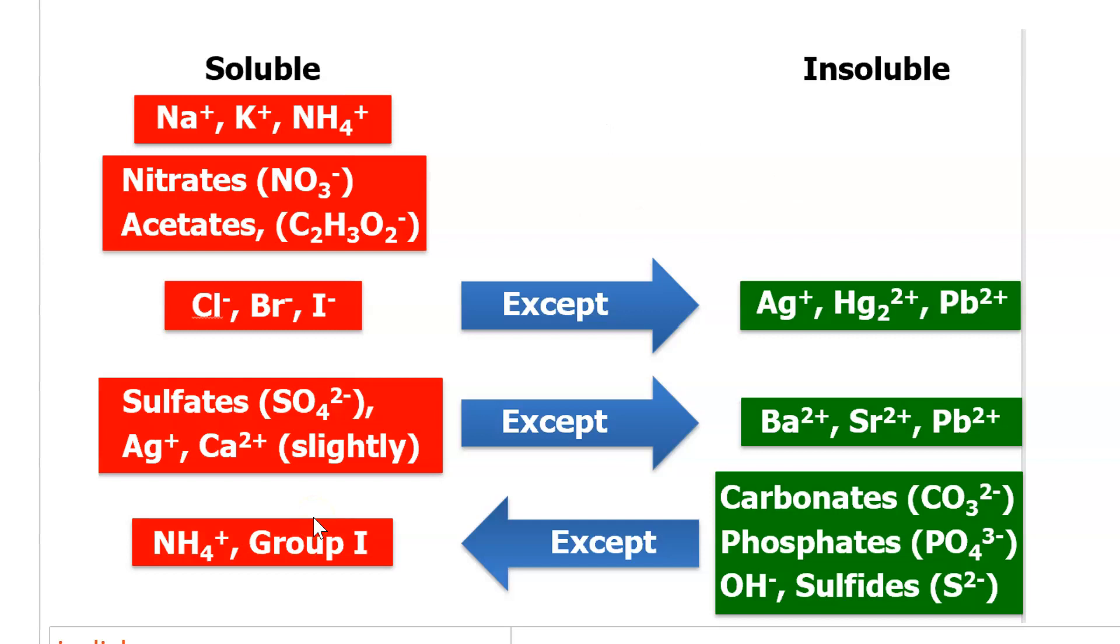Sulfates, these are compounds that contain the SO4 2- anion. These tend to be soluble, unless the cation is barium, strontium, or lead, too. Also, silver and calcium sulfate are slightly soluble. Hence, we would expect aluminum sulfate, AL2SO4 3, to be soluble. But, we would expect barium sulfate, BASO4, to be insoluble.